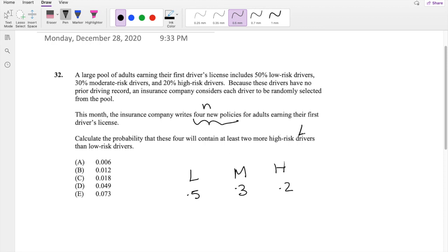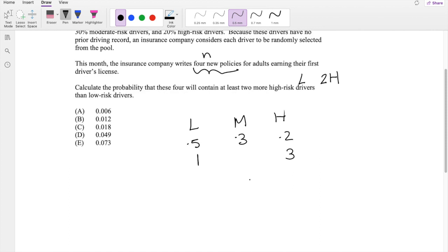So if there is one low risk driver, there should be at least two more high risk drivers. So that would mean if there's one low risk driver, there has to be two more than one, so that's two plus one, which is three. And because this already adds up to four, there will be zero medium risk.